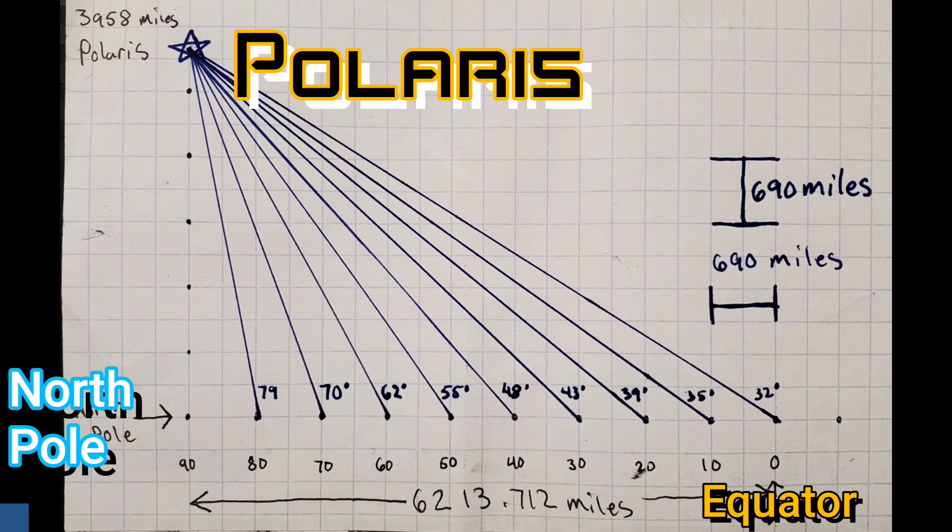An observer would have to be an infinite distance away for Polaris to even come close to being on the horizon. The farther away an observer moves from the North Pole, the more inaccurate the angles become.